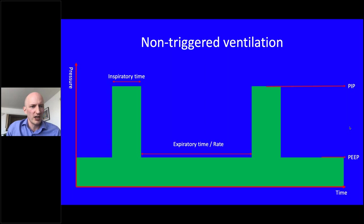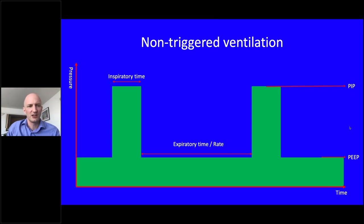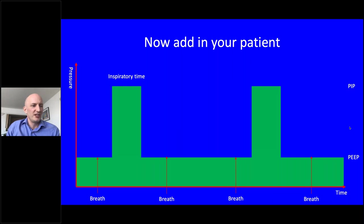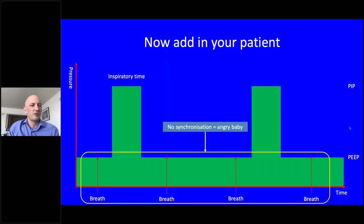Looking at the pressure curves: for non-triggered ventilation, we set inspiratory time, rate, PIP, and PEEP — those numbers dictate tidal volumes delivered. Whatever the baby is doing, the ventilator plugs away at the same settings with no attempt to synchronise. There's therefore no synchronisation and essentially a very angry baby at the end of your ventilator.